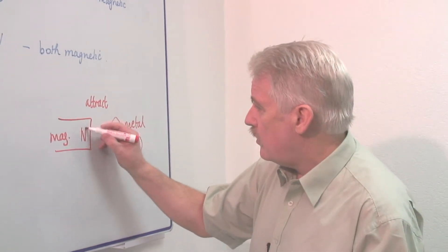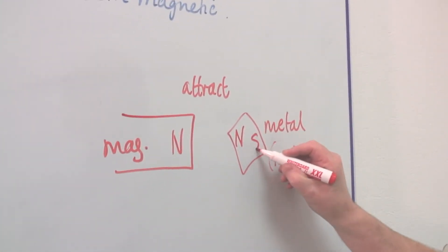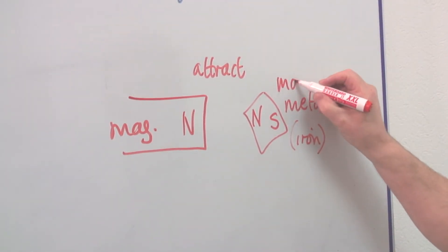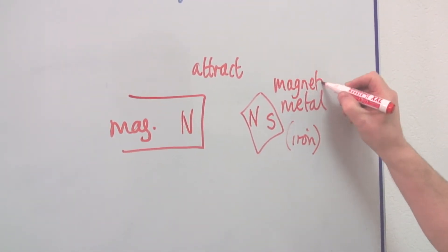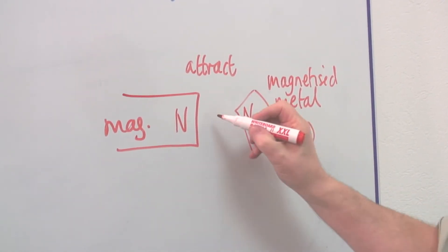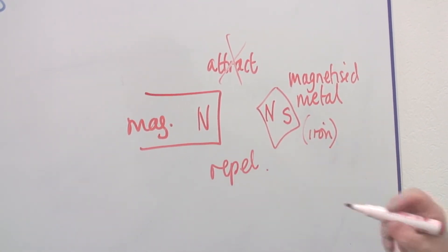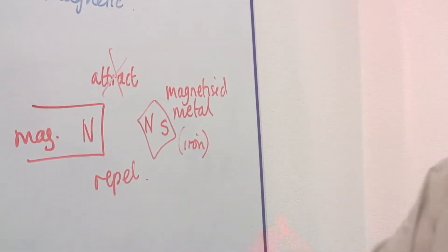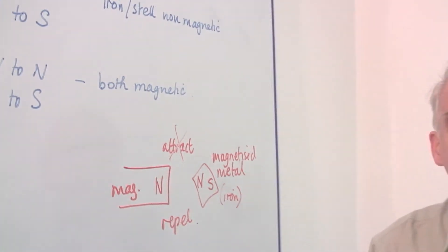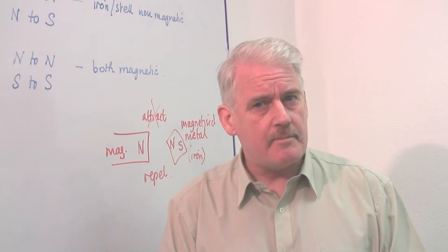So if this is a north pole and if I magnetize this so it produces, it becomes magnetized metal and it has a north at this end, then this will repel. So this is the only way we can actually get pieces of metal to be repelled by an electromagnet or any magnet.